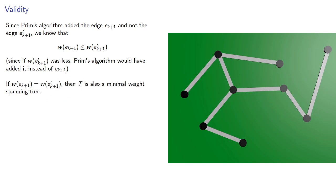If the weights are equal, then T is also a minimal weight spanning tree, because we replaced one edge in a minimal weight spanning tree with another edge with the same weight.